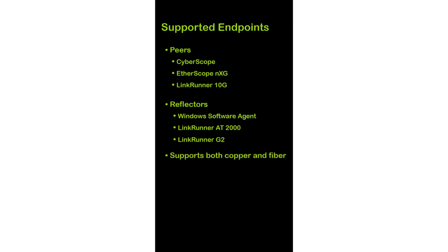The performance test application requires a wired connection using the port on the top of the unit to run. If you're using the copper or fiber test ports, you must run an auto test to connect the port to the network and obtain an IP address.